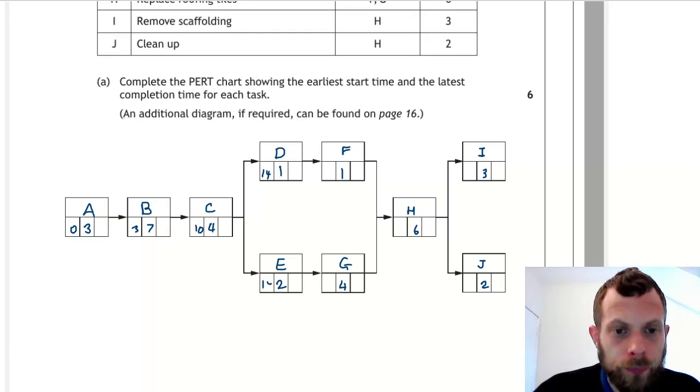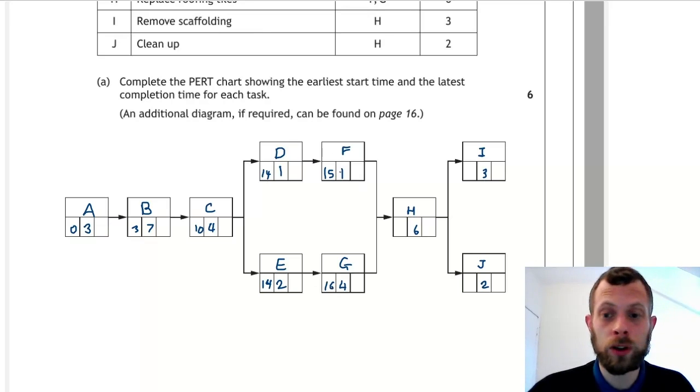So 14 goes in both of these boxes. 14 plus one is 15, 14 plus two is 16. Now for task H we need to be a little bit careful. 15 plus one is 16, 16 plus four is 20. We take the later of those two, which is 20.